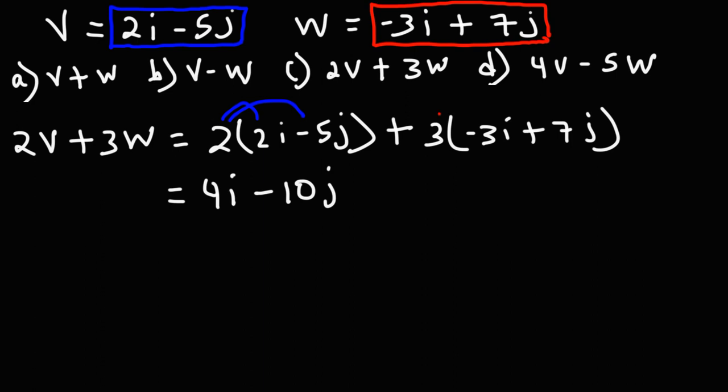And then 3 times negative 3i is negative 9i, and 3 times 7j is 21j.